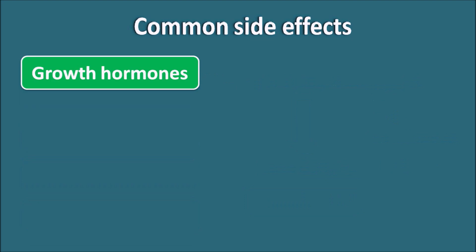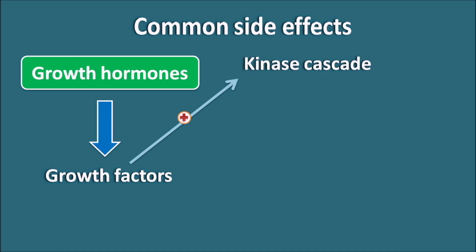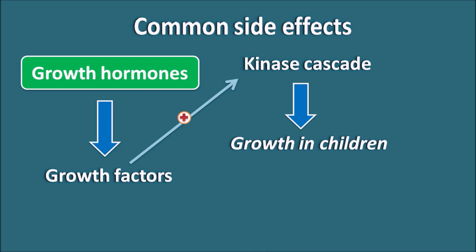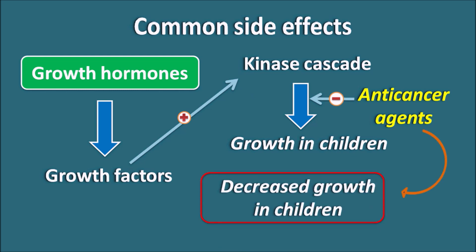Next is the effect on growth hormones. Growth hormones release mediators like growth factors, which play an important role in cell division by stimulating kinase cascade systems, resulting in cellular signaling and thereby promoting cell division. Growth rate is more pronounced in children. So when we use anti-cancer agents particularly in children, they can inhibit this kinase cascade, thereby producing decreased — stunted — growth in children.